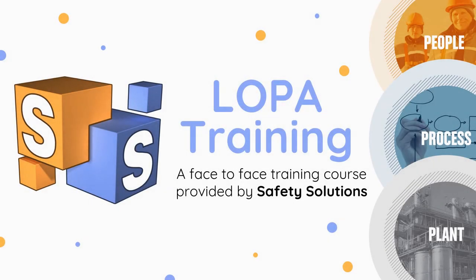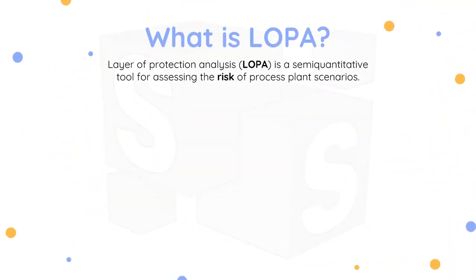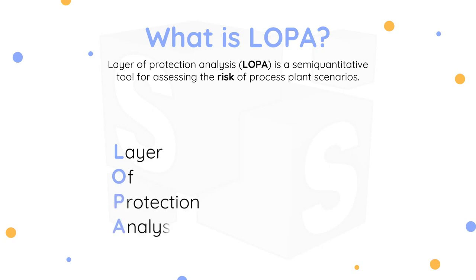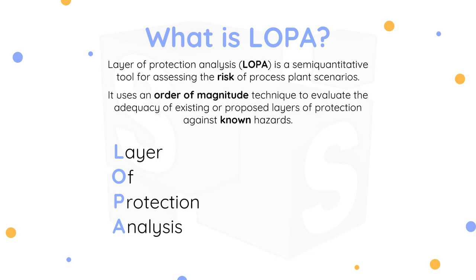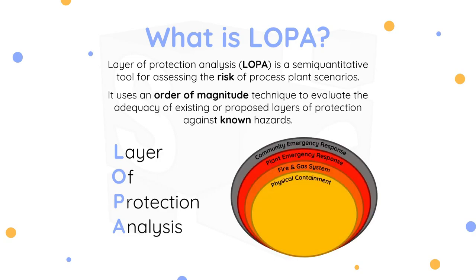Welcome to a brief presentation on the LOPA training course provided by Safety Solutions. Layer of Protection Analysis is a semi-quantitative tool for assessing the risk of process plant scenarios. It uses an order of magnitude technique to evaluate the adequacy of existing or proposed layers of protection against known hazards.